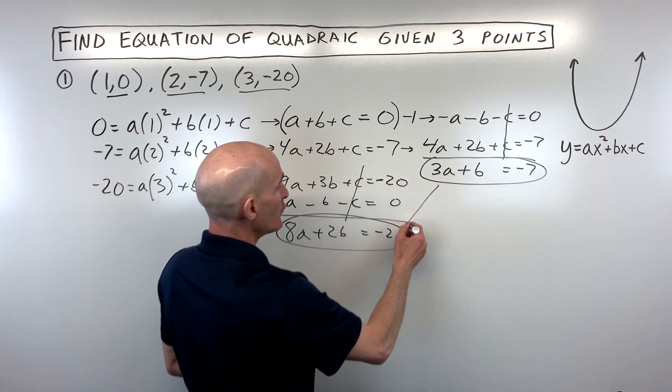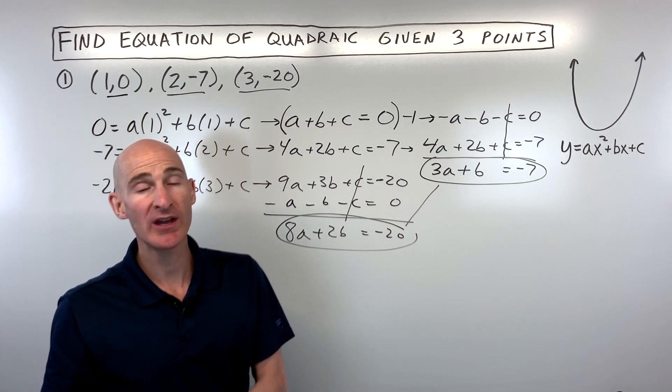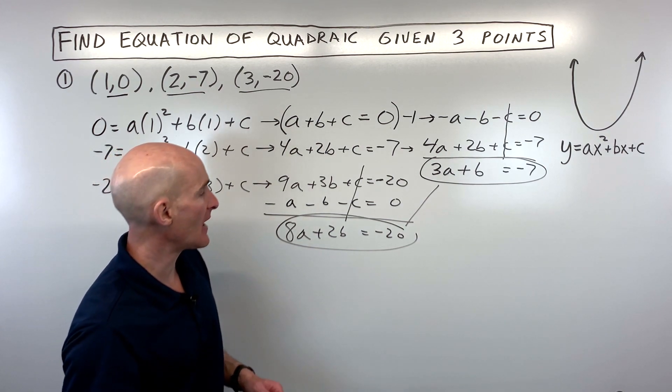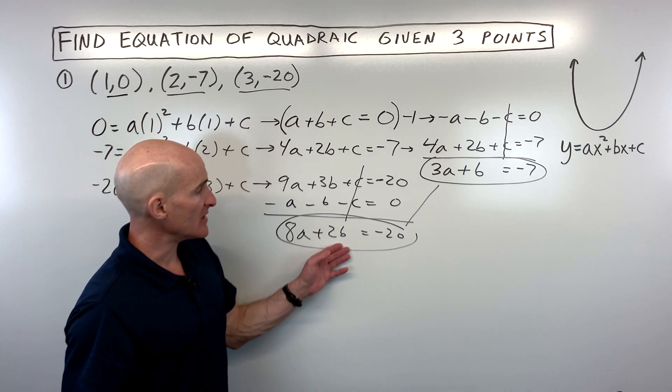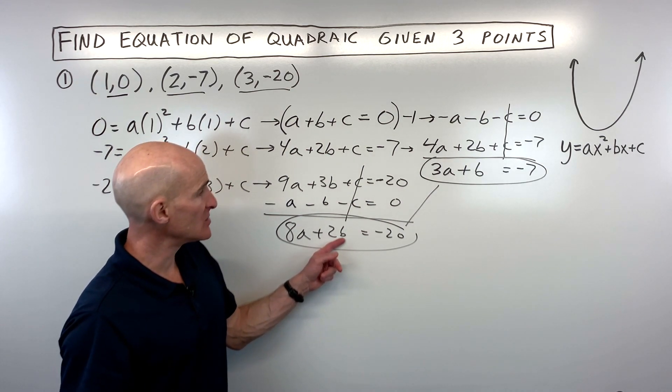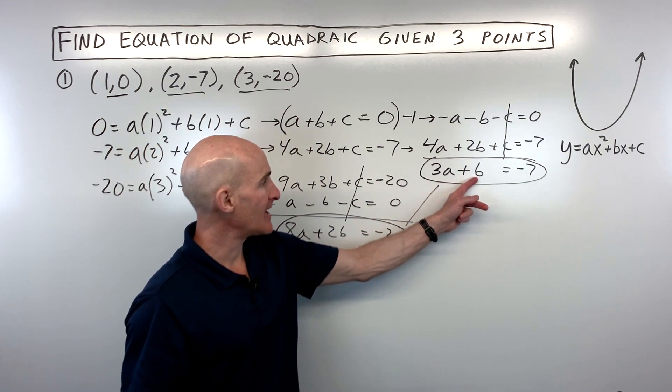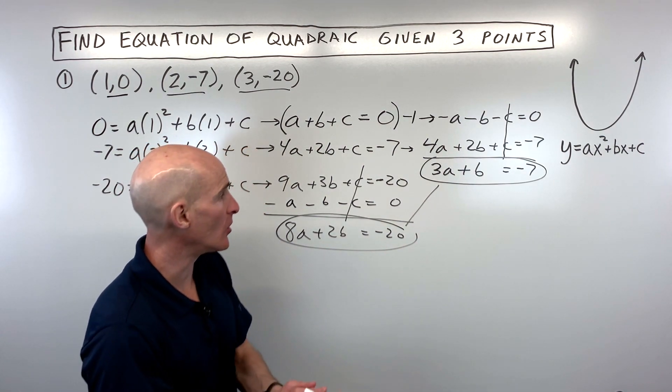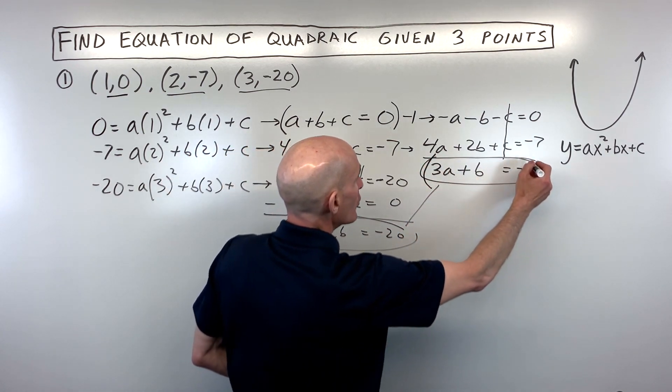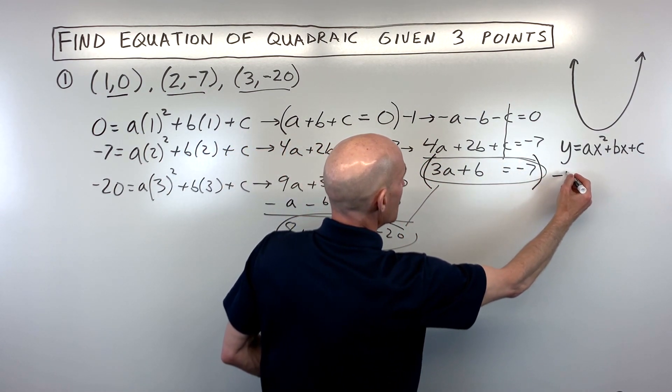So now look, we're down to two variables and two equations. So this is the system that we want to solve now. Do we want to try to eliminate the a's or do we want to try to eliminate the b's? I think b is going to be a little bit easier. If we can just make this negative 2b, when we add it to this equation, the positive 2b, the b's will cancel. So let's go ahead and multiply this whole equation by negative 2.